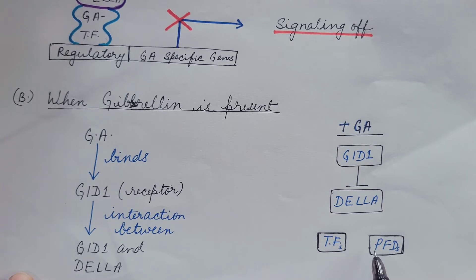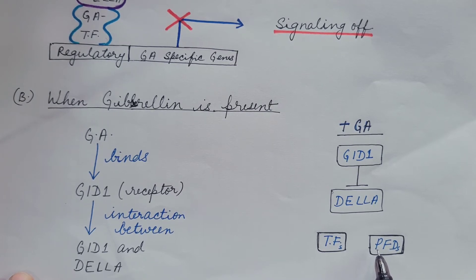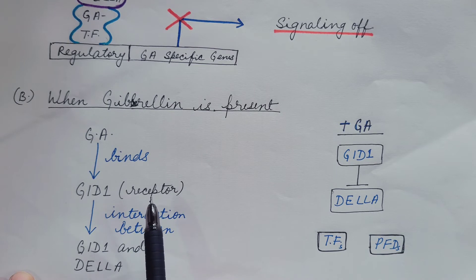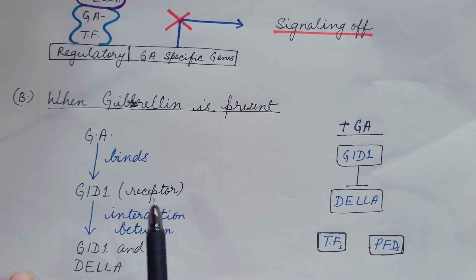They are free. They are able to transcribe genes and hence we say signaling is on. Let us understand this mechanism in detail through this flow chart.